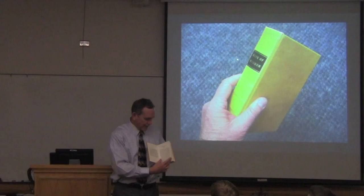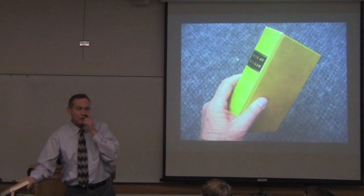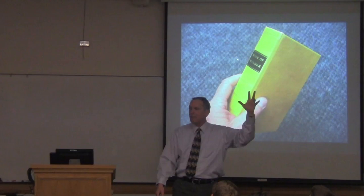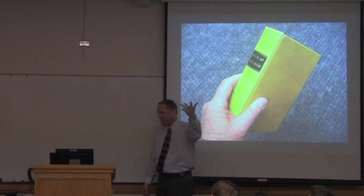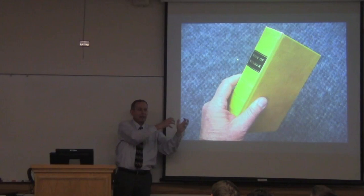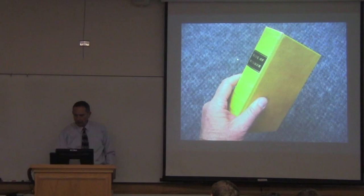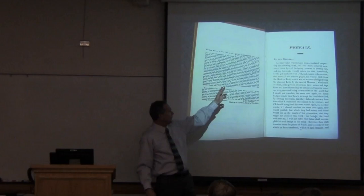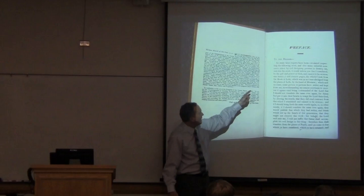There's a preface right up front, before you get to the first page of 1 Nephi. In that preface, Joseph Smith explained that somebody had stolen his translation of Mormon's Book of Lehi, and that the Lord had then showed him that in the collection of plates, he could go to this other thing and translate a first-person account from Nephi and substitute that in. He explained that to the reader in this preface. He says he translated by the gift and power of God, and caused to be written 116 pages which he took from the Book of Lehi, which was an account from the plates of Lehi by the hand of Mormon — which said account some person or persons have stolen.